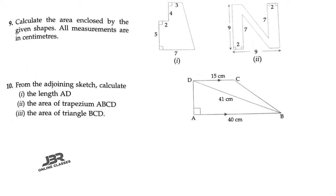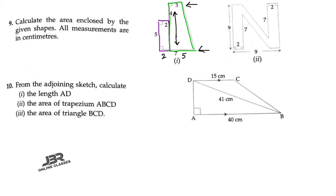So here in the first diagram, you have to join this line. The purple one is a rectangle and the green one is our trapezium. The whole base is equal to 7, and if this one equals 2, then definitely that one equals 5. For the trapezium, the two parallel sides are 3 and 5. The distance between the two parallel sides is 4 plus 5, equal to 9.